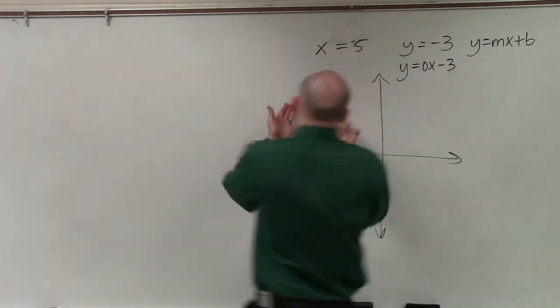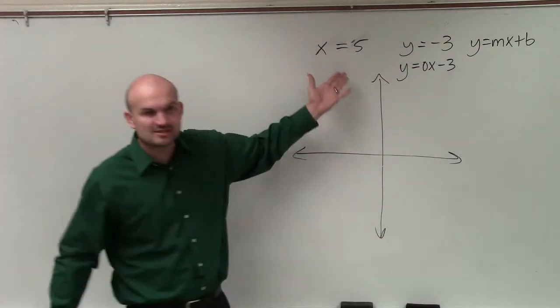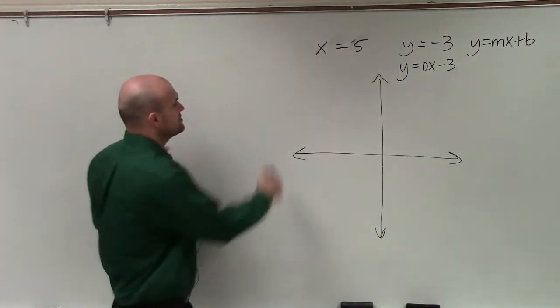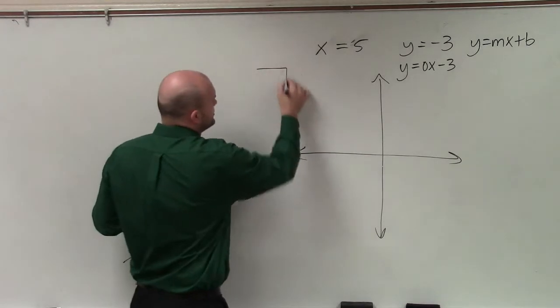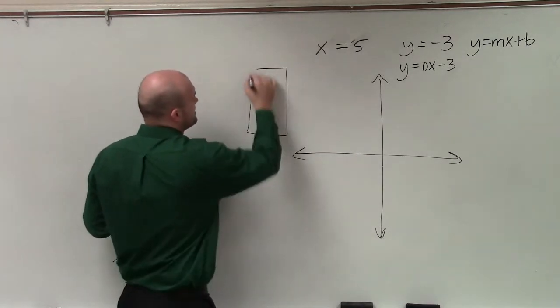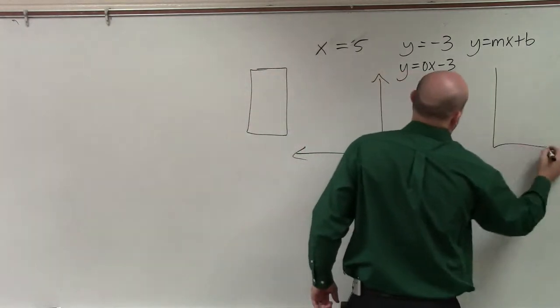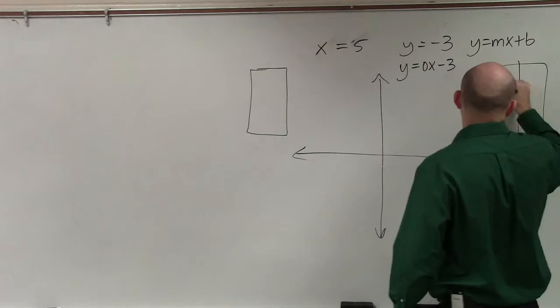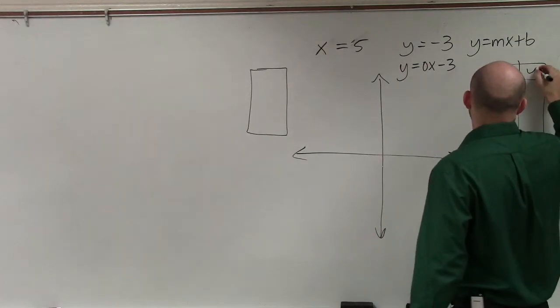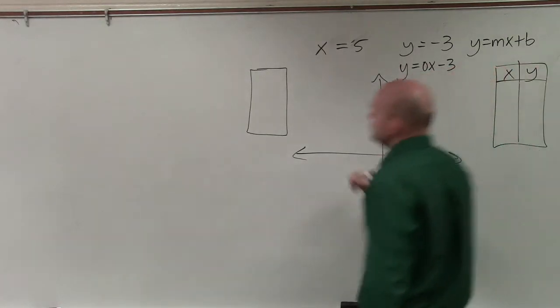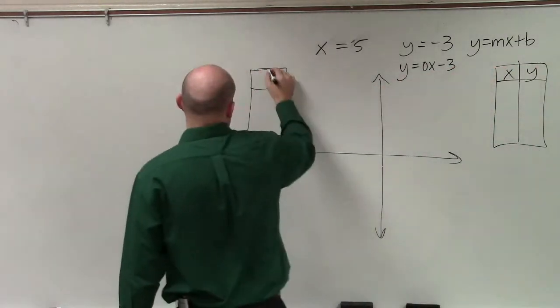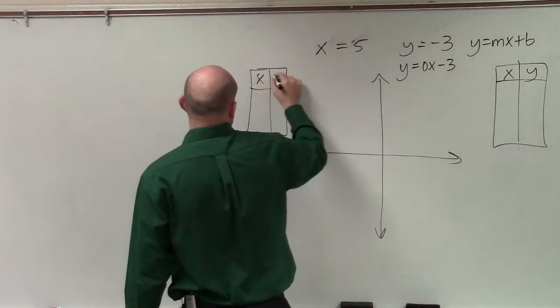Over here, you can't even write this in slope-intercept form. So what I'm going to do to explain these is just use a table of values. Now, when we did a table of values on your functions today, you guys chose values for x.